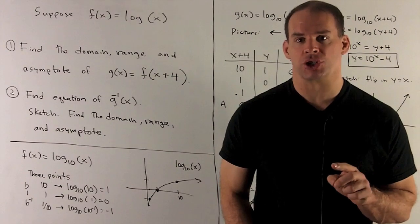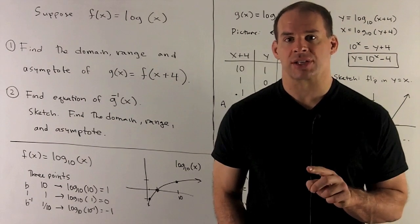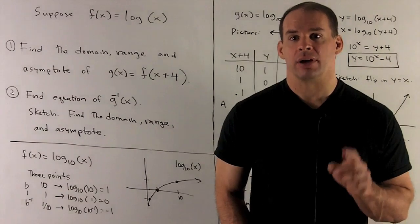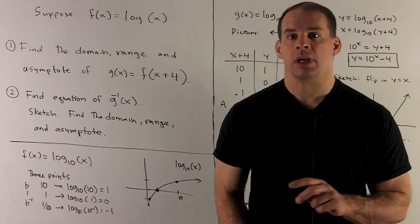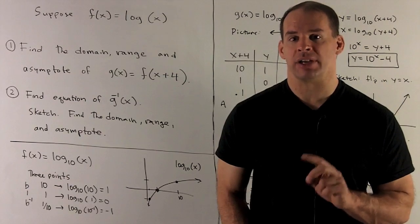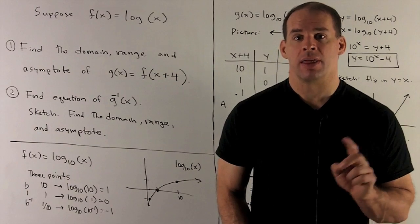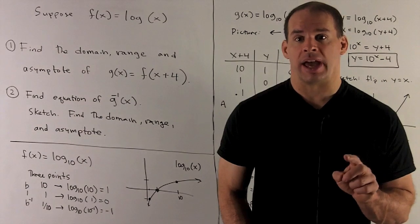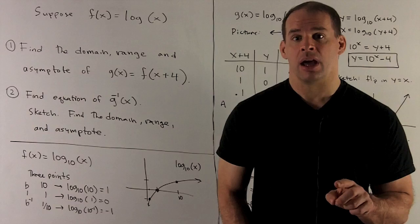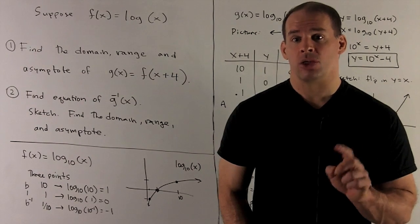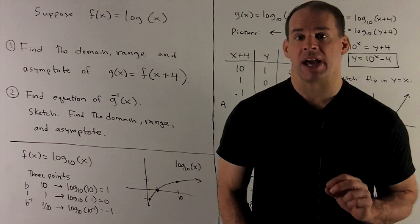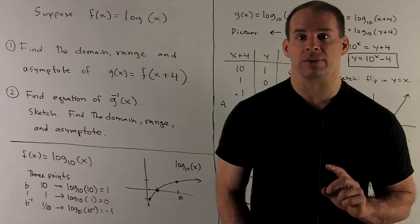Suppose f of x is equal to the function log of x. We let g of x be equal to f of x plus 4. I want to find the domain, the range, and the asymptote of g of x. Then we're going to take a look at the inverse function of g, g inverse — again, the domain, range, and asymptote. And we'll want sketches of both functions, g and g inverse.